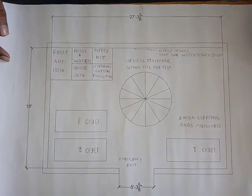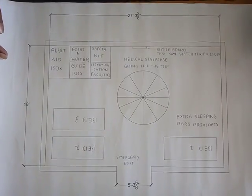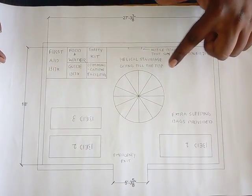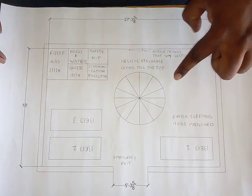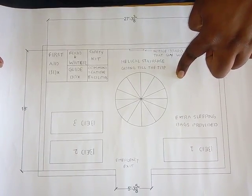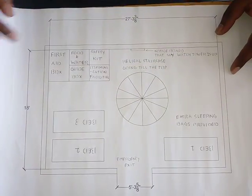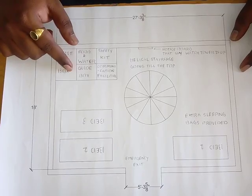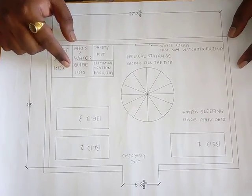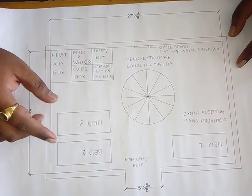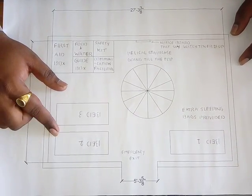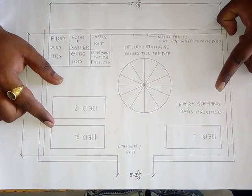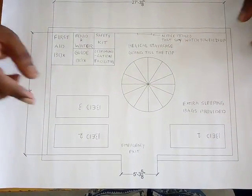Here is the plan we have provided for the survival shelter. This is a spiral staircase which goes from the top to the bottom of the ground. Here is the first aid box, food and water products, guide box, safety kit, and three beds are provided with an extra sufficient bed seat if needed.